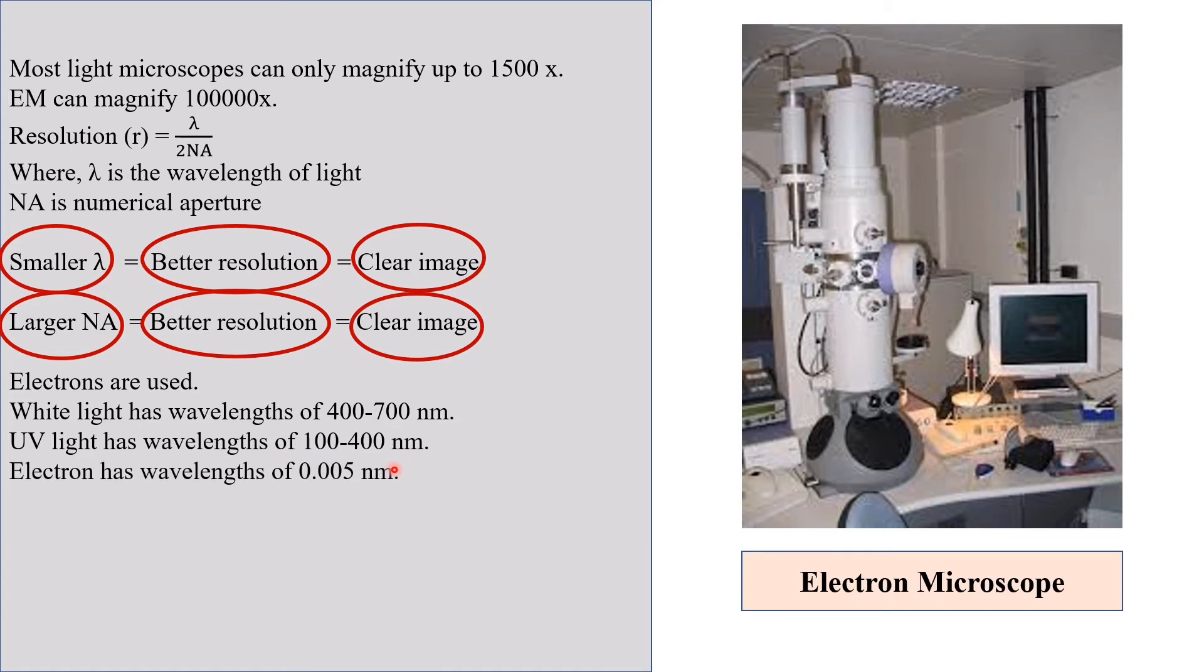In case of electron microscope, we use flow of electrons and electron has wavelength of 0.005 nanometer. So now you can imagine, wavelength of electron is much more less than the wavelength of light, that will ultimately produce much better resolution than UV or visible light.